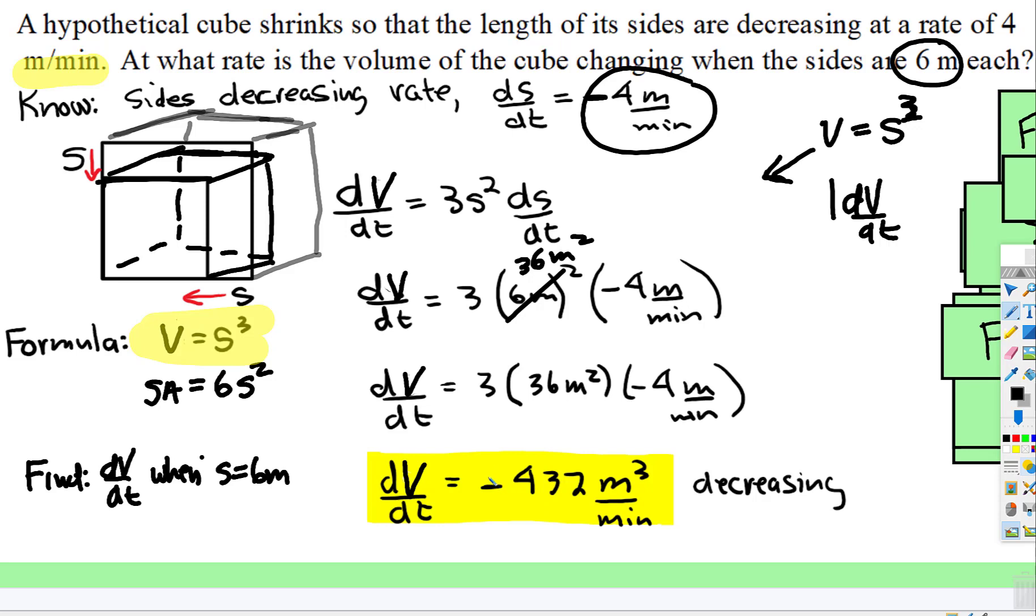Or you could say that the volume is changing at 432 meters cubed per minute at a decreasing rate. So depending on what your professor or teacher wants, that's what you put. All right, that's it.